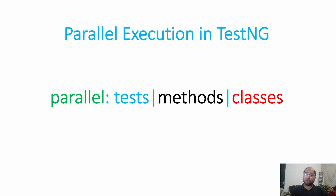Welcome back to my channel, Prince Automation Destination. Today we are going to talk about another important topic: how to execute test cases in parallel using TestNG. There are various ways to do this, using parallel equal to methods and classes in TestNG XML. This is also one of the most widely asked interview questions - what is the difference between parallel equal to test methods and classes? By the end of this lecture, you'll be able to answer this question.